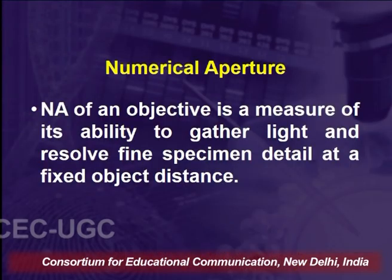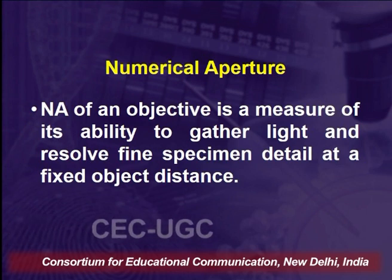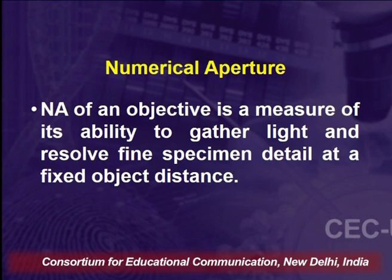The power of a lens is the reciprocal of the focal length expressed in meters, defined as D = 100/F diopters. There is also one more term associated with a microscope: numerical aperture of an objective, which is a measure of its ability to gather light and resolve fine specimen detail at a fixed object distance. While magnification tells us the image size, numerical aperture tells us how fine the details have been resolved.